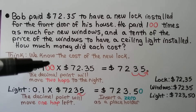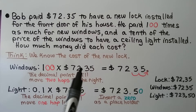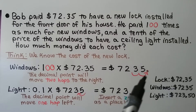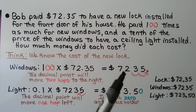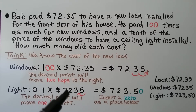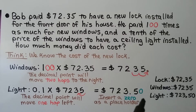We have two zeros, so the decimal point will move two hops to the right. It's in between the two and the three — it's going to move two hops to the right, one, two — to the right side of the five. We're going to have $7,235. Now we can use the price of the windows to find the ceiling light that is one-tenth as much. We multiply one-tenth times $7,235. Because it's one-tenth, we're going to move the decimal point one hop to the left, and we insert a zero as a placeholder because this is money. We'll have $723.50.